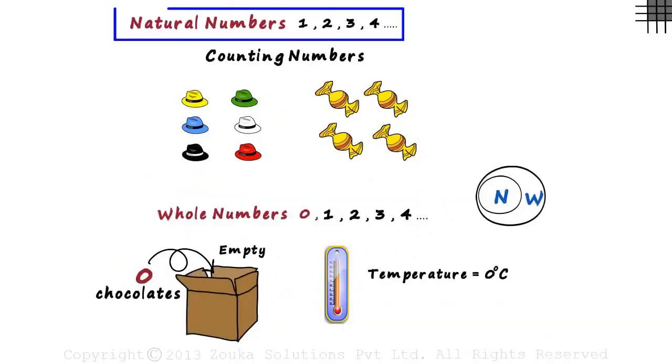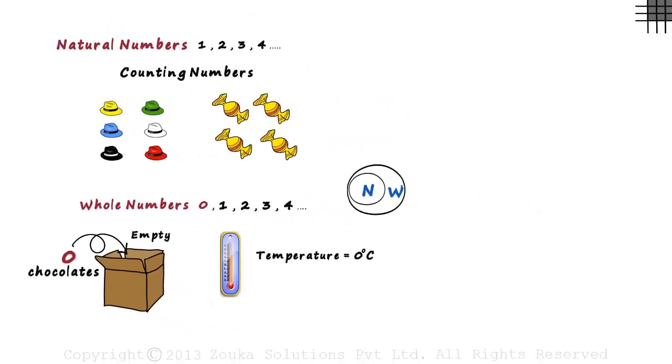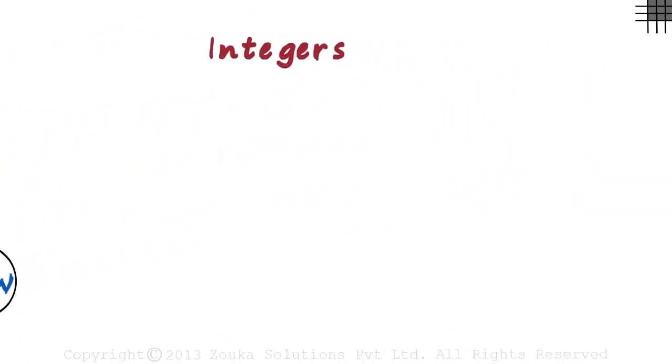We have seen what natural and whole numbers are. The whole numbers comprise of the entire set of natural numbers and zero. So what are integers then? Let's zoom in a bit.